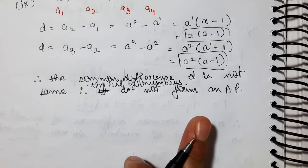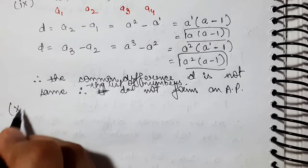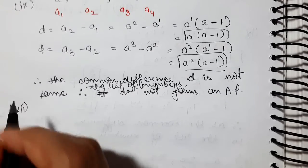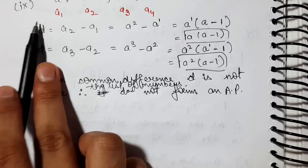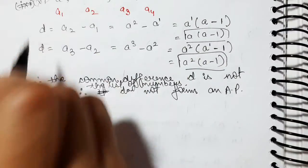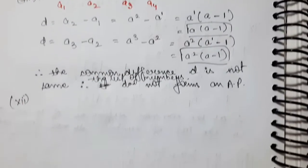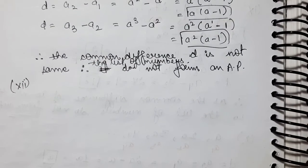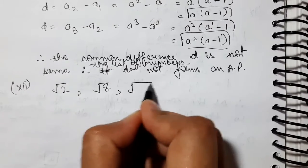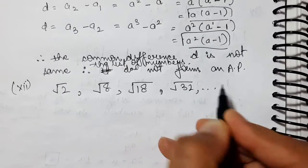Fine. The 11th part is done. Now we do the 12th part: √2, √8, √18, √32, and so on.